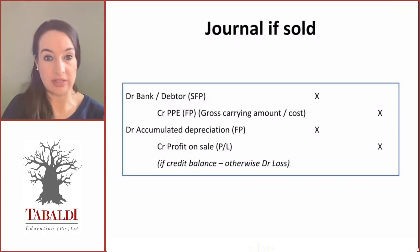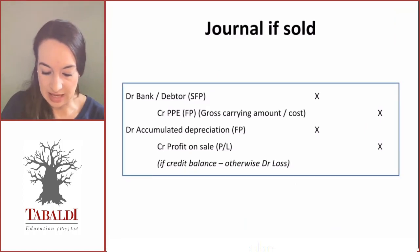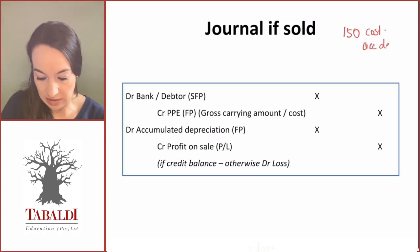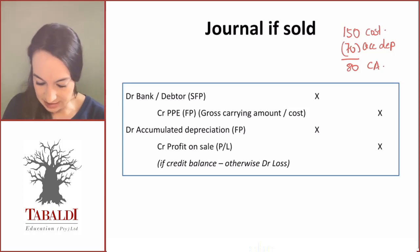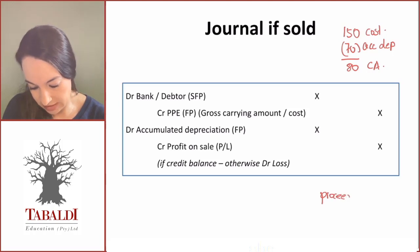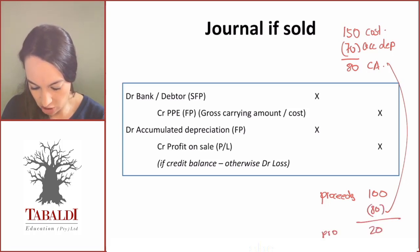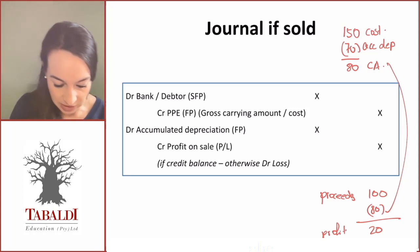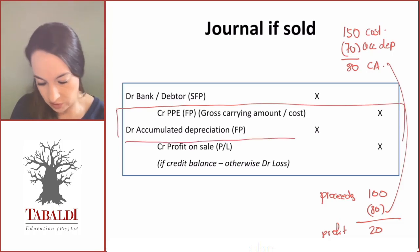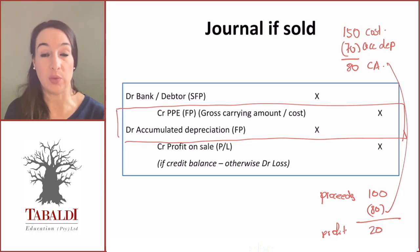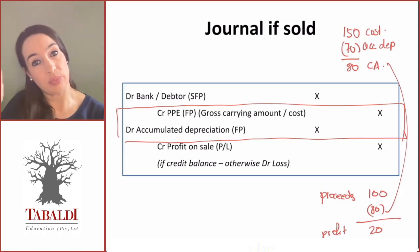Looking at the basic journal entries — let's say that we had an item of equipment that originally cost 150 rand. We've recognized accumulated depreciation of 70, which means we are left with a carrying amount of 80. However, that asset is subsequently sold and the net proceeds we receive are 100. Comparing that to our carrying amount of 80 means we have a profit on de-recognition of 20. When you process these journal entries, you have to reverse the cost and the accumulated depreciation, because even though in the statement of financial position we might be showing the carrying amount — the net of cost and accumulated depreciation — in our ledger accounts we track the depreciation separately from the cost.